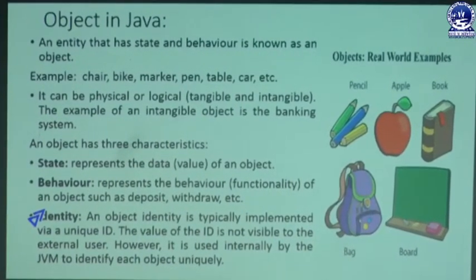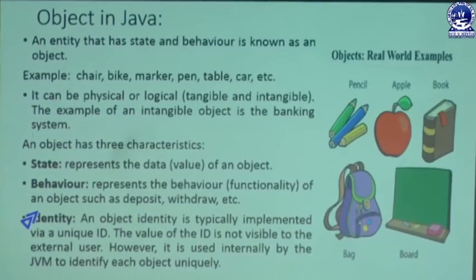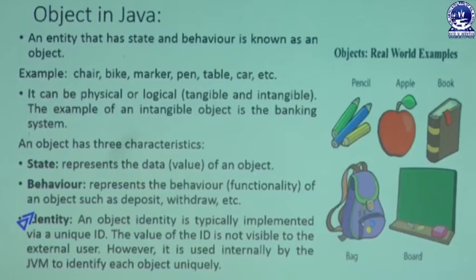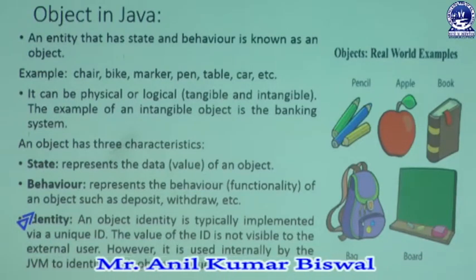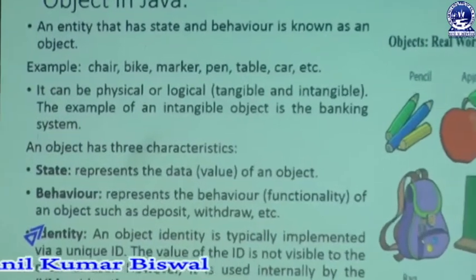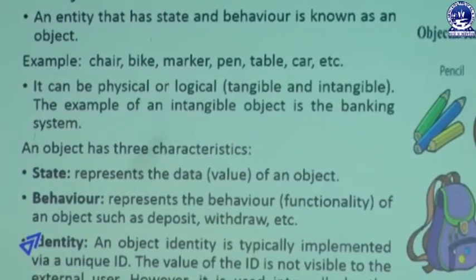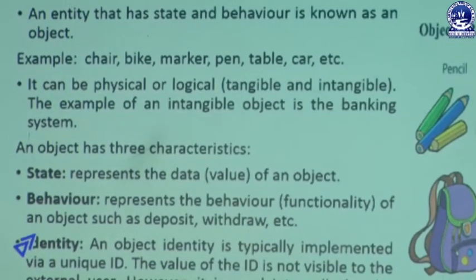Every real-world entity is known as an object. For example, a chair is an object, a bike is an object, a marker is an object, a pen is an object, a table is an object, a car is an object, and so on. Every real-time entity is known as an object — it is related to physical or logical aspects that may be tangible or intangible objects.